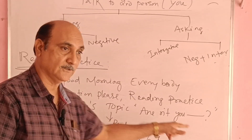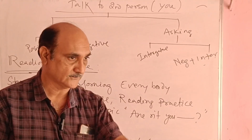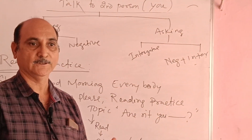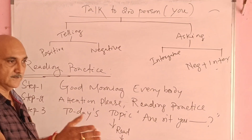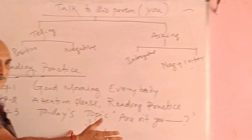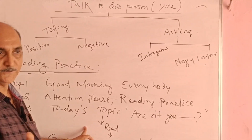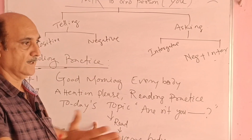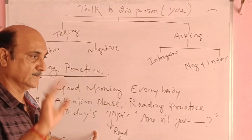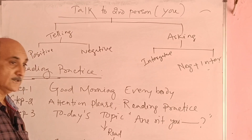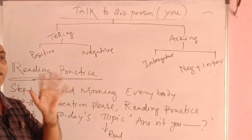The topic is 'Are not you.' So that is what you have to study. Example sentences: 'Are not you smart? Are not you my student? Are not you intelligent? Are not you a student?' And the last step is to say goodbye.